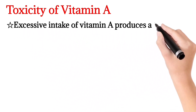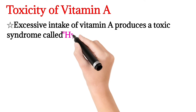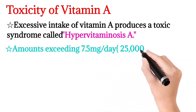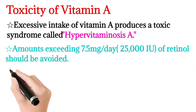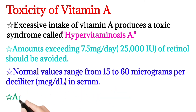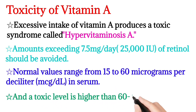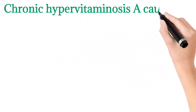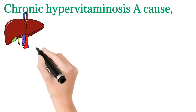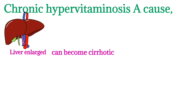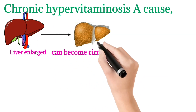Toxicity of Vitamin A: excessive intake of Vitamin A produces a toxic syndrome called hypervitaminosis A. Amounts exceeding 7.5 mg per day should be avoided. The normal value ranges from 15 to 60 micrograms per day, and the toxic level is higher than 60 to 100 micrograms per day.